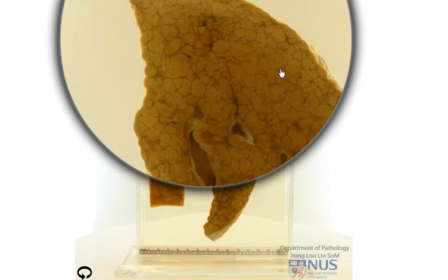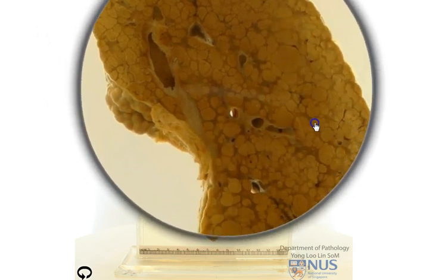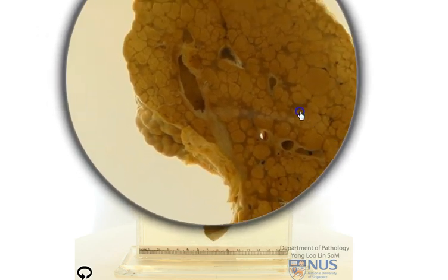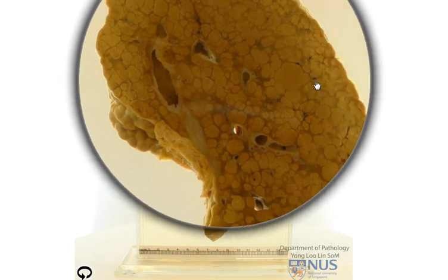One of the causes is biliary causes such as biliary cirrhosis or primary sclerosing cholangitis. Usually biliary causes will confer a dark greenish colour to the hepatic parenchyma, which we do not see here. Other than that, it would be very difficult to ascertain the cause. The commonest causes would be things like alcoholic liver cirrhosis, or perhaps viral infections like hepatitis B or even hepatitis C.